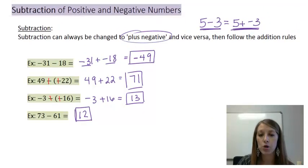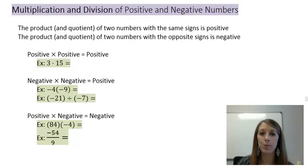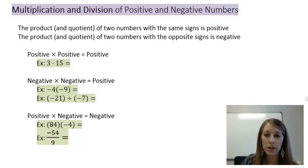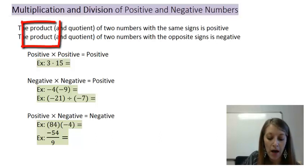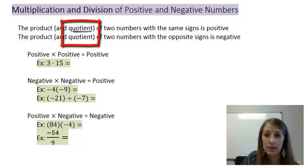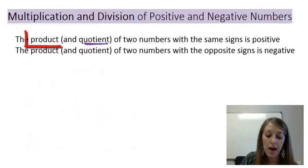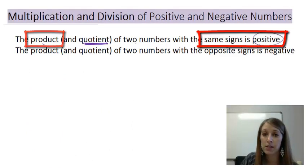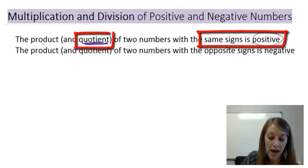That's how we add and subtract positive and negative numbers. The next operation is multiplication. Multiplication and division have the exact same rule, so I'll combine them. The word product means multiply, and the word quotient means divide. If you multiply two numbers with the same sign, your answer is going to be positive. If you divide two numbers with the same sign, the answer is also going to be positive.